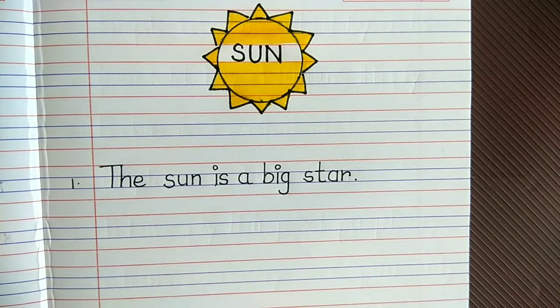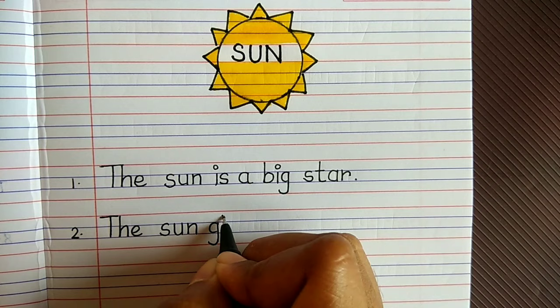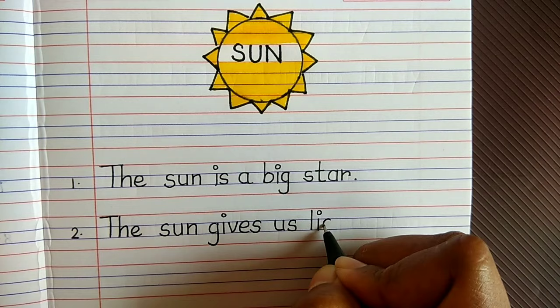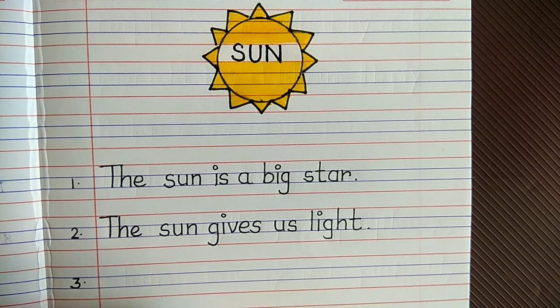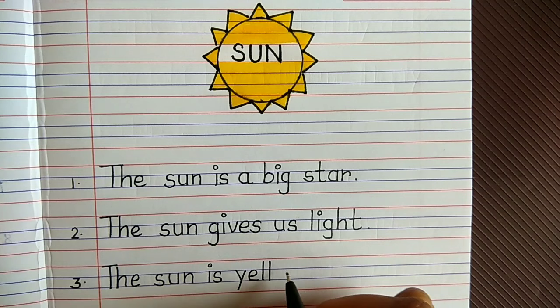First point is the Sun is a big star. Second point, the Sun gives us light. Third point, the Sun is yellow in color.